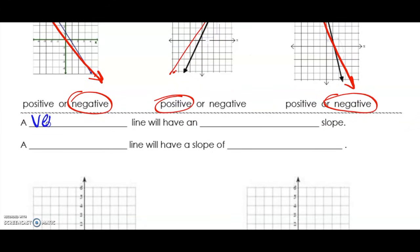A vertical line is one that goes up and down. That line will have an undefined slope.